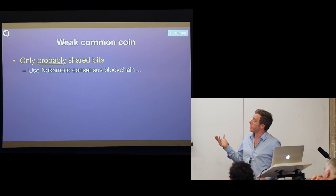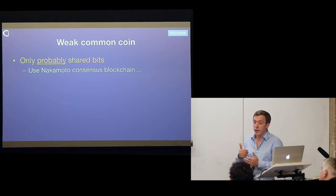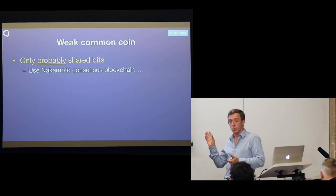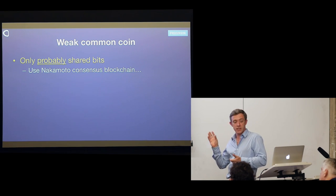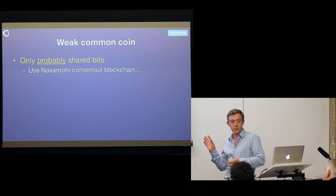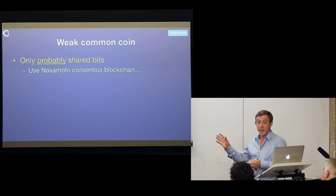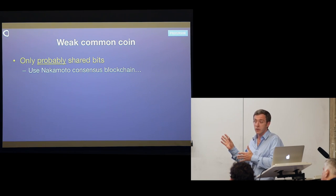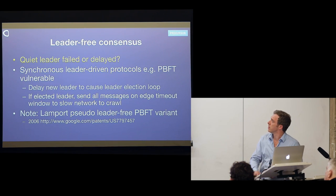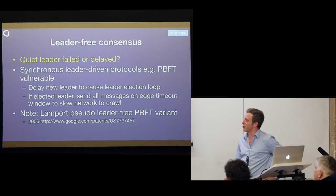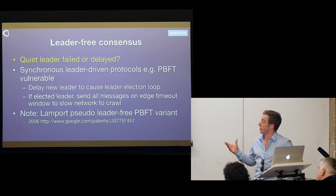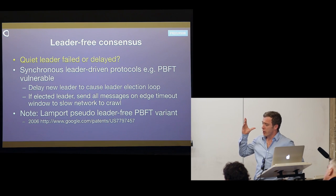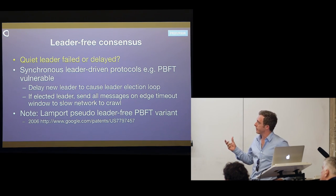There's also a thing called a weak common coin, which only provides probably shared random bits. This is important because some people are working on Byzantine consensus protocols that can work with weak common coins, and a weak common coin can be supplied by a very fast Nakamoto blockchain. You have two kinds of consensus algorithm: one has a leader, one is leader-free. I prefer leader-free because — how do you determine if a quiet leader has failed or been delayed? There's just no way of telling.